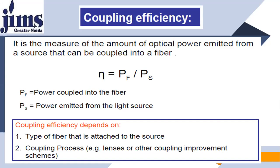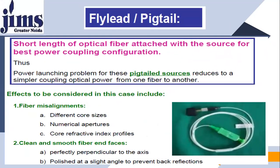The coupling efficiency actually depends on the type of fiber attached to the source, and second, the coupling process — for example, lenses or other coupling improvement schemes. There is a term called fly lead or pigtail. It is a short length of optical fiber which is attached to the source for the best power coupling configuration. When you purchase an optical source, an inbuilt optical fiber is already attached to the optical source — this short length is called a pigtail or fly lead, and using it can improve coupling efficiency.